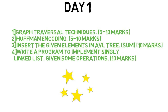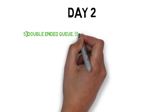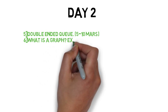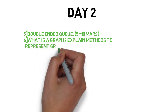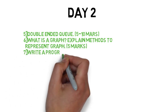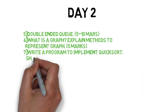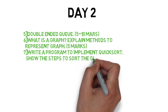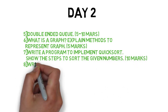Now Day 2 of the plan. The fifth question is a double-ended queue — this will involve writing a specific code. The sixth question is: what is a graph? Explain methods to represent a graph. This comes for 5 marks mainly. The seventh question is: write a program to implement quick sort and show the steps to sort the given numbers — write the steps in a good way.